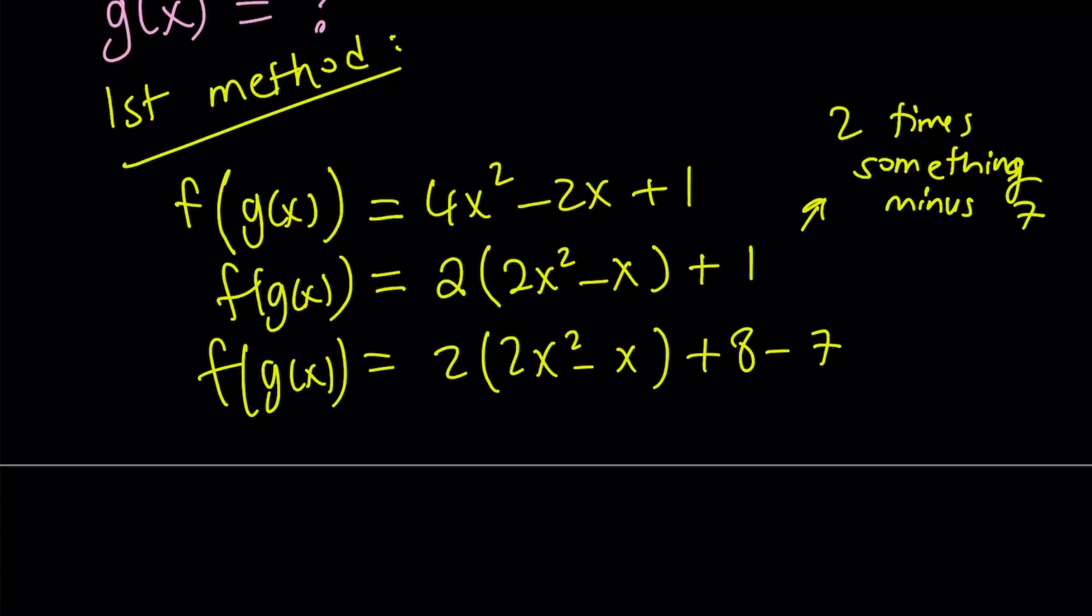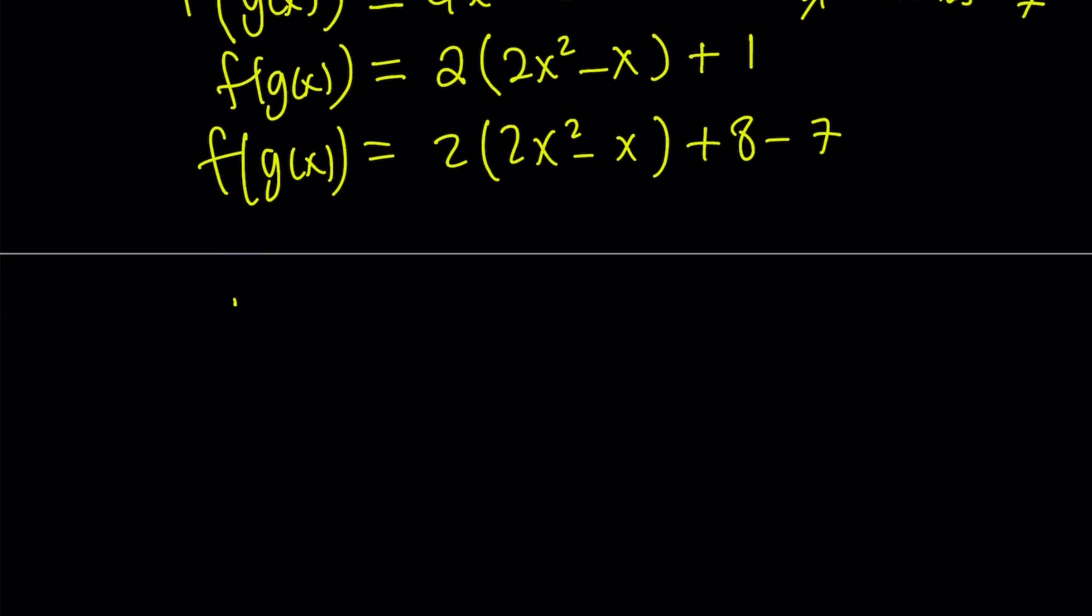So now I'm going to leave out the minus 7 and put the 8 inside. So how can I get the 8 inside? I can write it as 2 times the quantity 2x squared minus x plus 4. There you go. Now when you distribute the 2, you're going to get 8 from there. Minus 7 is left outside.